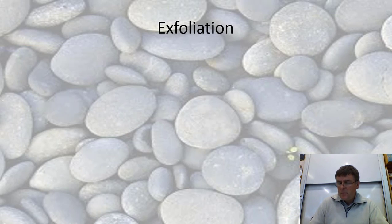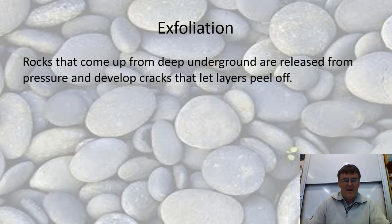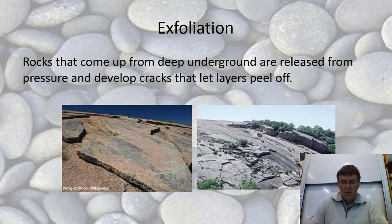Exfoliation — surface layers tend to come off. It often happens when rocks have been deep underground and are finally exposed at the surface; the pressure comes off and the top layers come off like layers of an onion. Commonly what happens is these big granite domes that form under the ground — granite requires heat and pressure to form. When the pressure comes off, the outer layers tend to pop off. You can see how it's like an onion skin type of layer; you can imagine it sitting off and then this will just slide away.